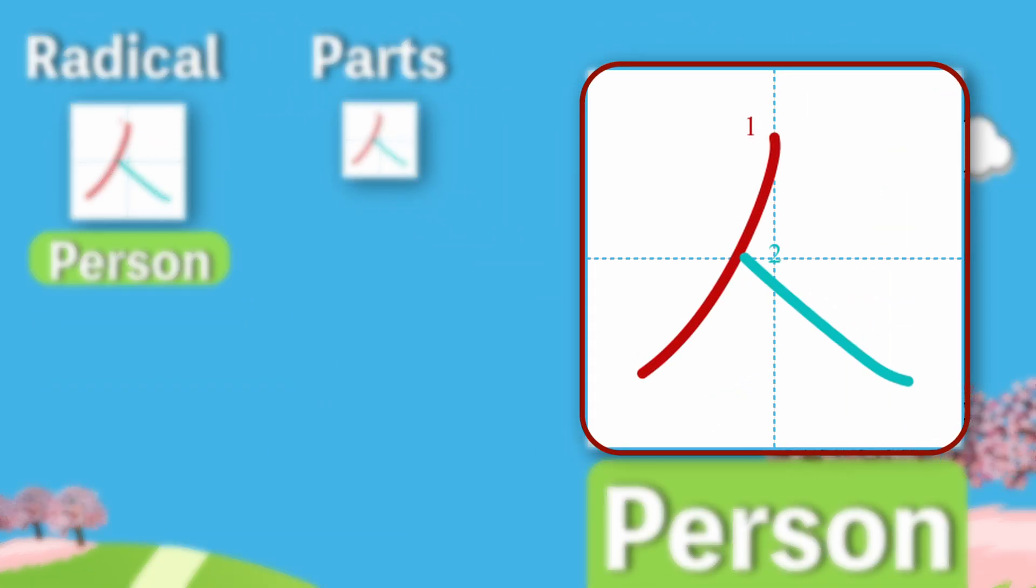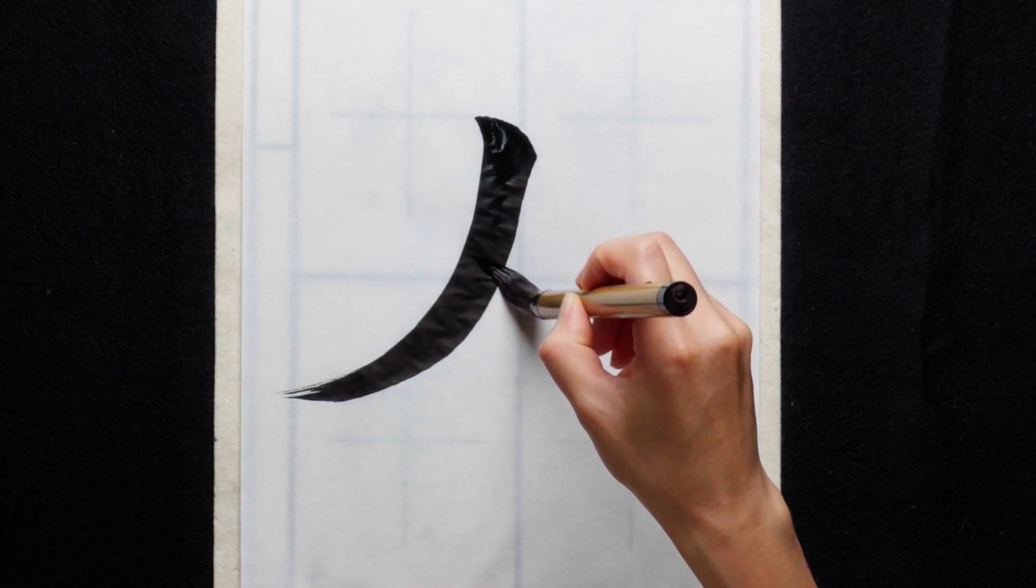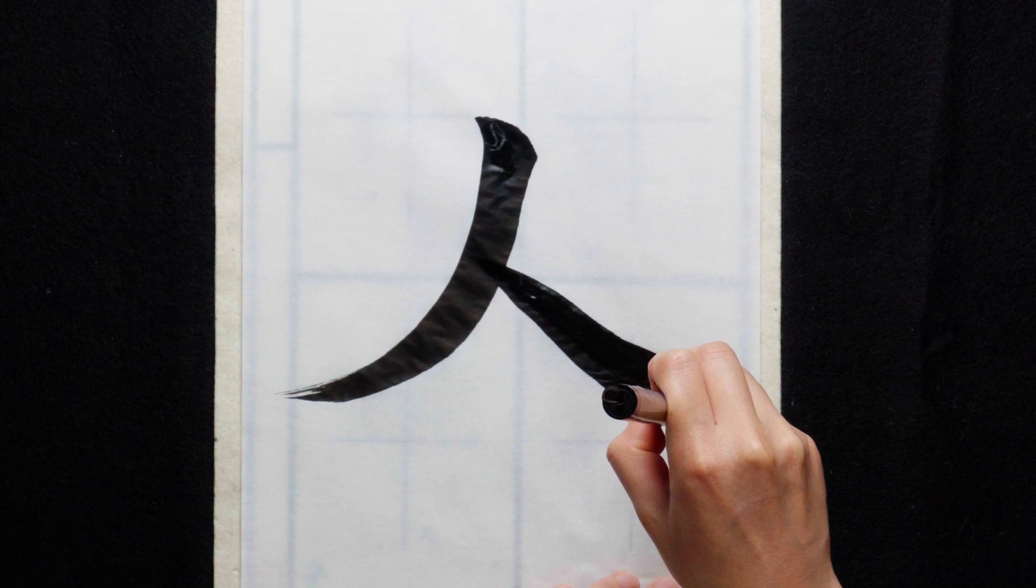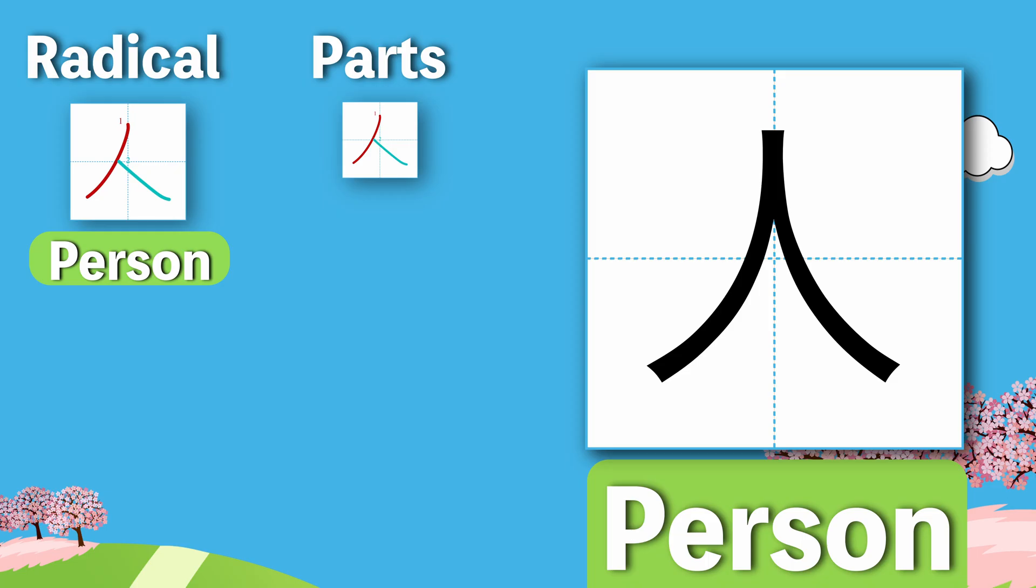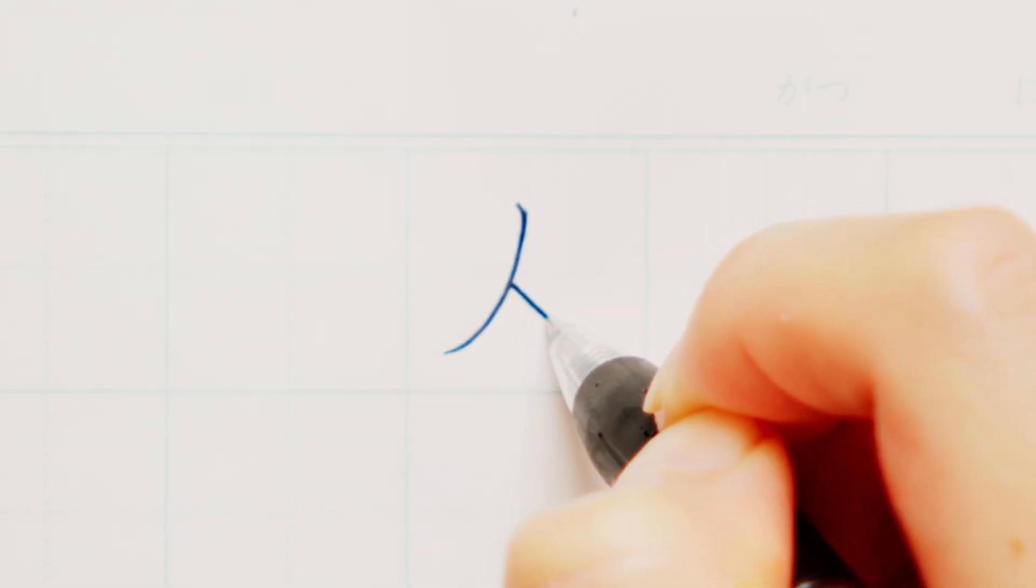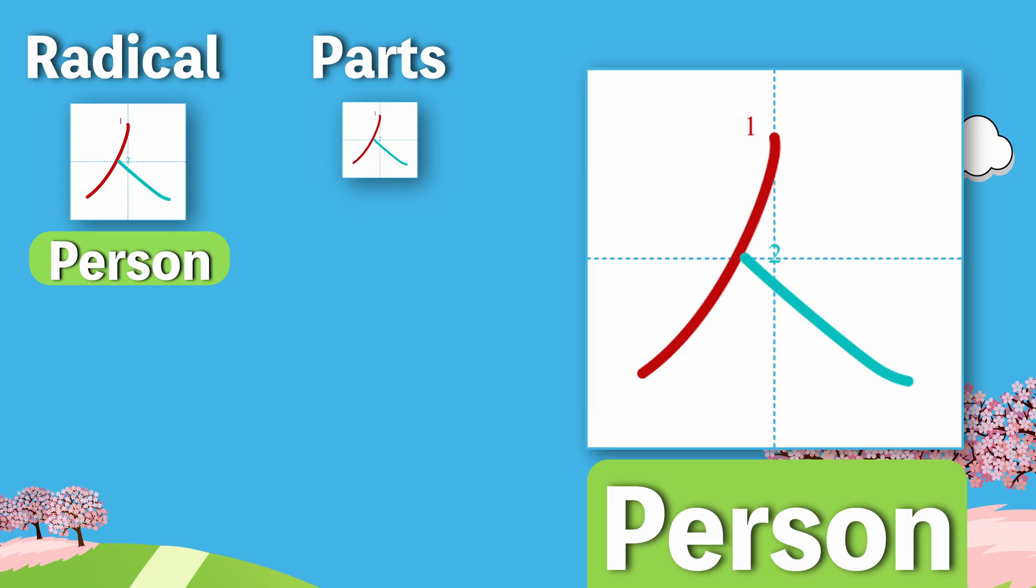The kanji person has two strokes. As with almost all diagonal strokes, we start with the one that is drawn right to left. In this case, that means we draw the stroke on the left first. Interestingly, while many computer fonts make it look like both strokes are of equal length and starting from the same point at the top, when you actually write it, the second stroke is drawn from just above the middle of the first stroke.